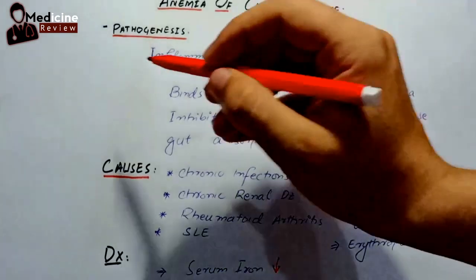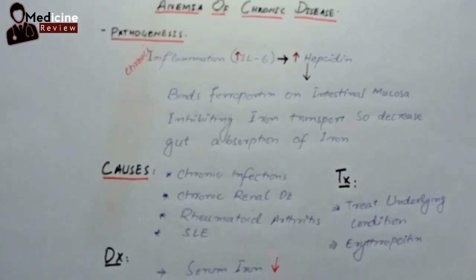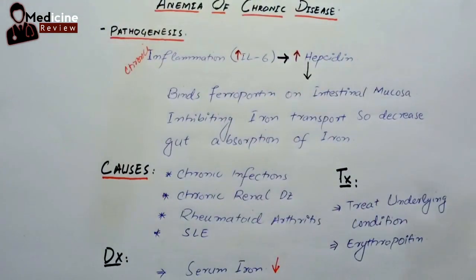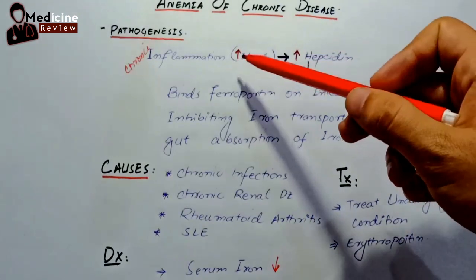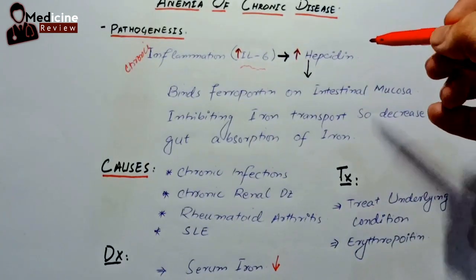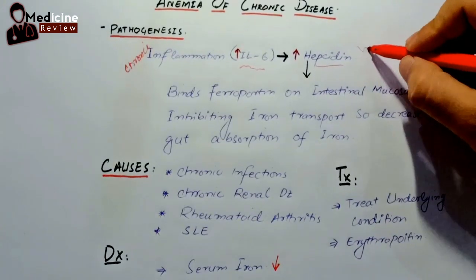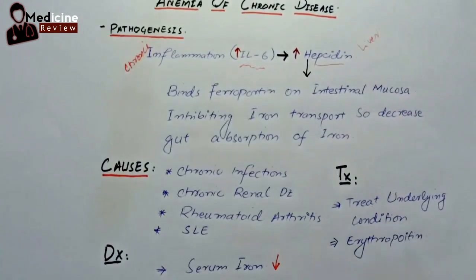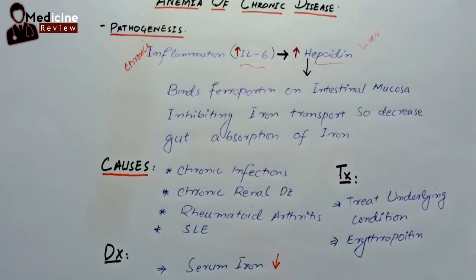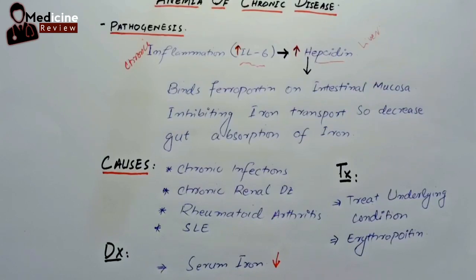Let's go into the pathogenesis of anemia of chronic disease. Any chronic inflammation or chronic infection can lead to increased levels of interleukin-6. Interleukin-6 will lead to increased secretion of hepcidin from the liver.